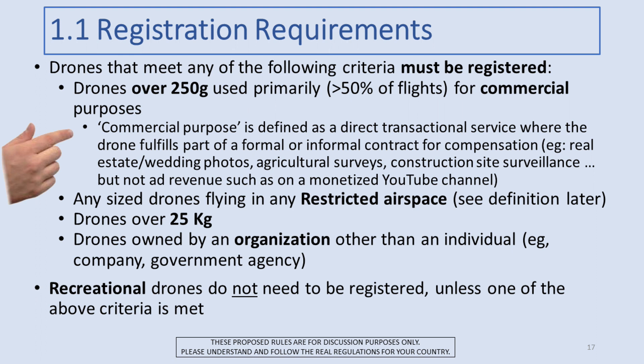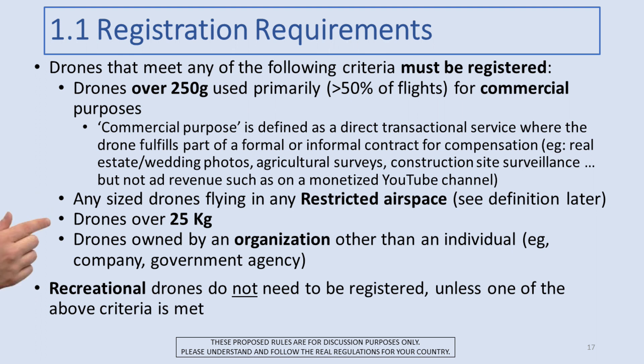The second criteria is any size drone flying in restricted airspace — think of it for now as controlled airspace. If you're flying in controlled airspace, you need to be registered. Third, any drone over 25 kilos must be registered. And finally, any drone owned by an organization rather than an individual.